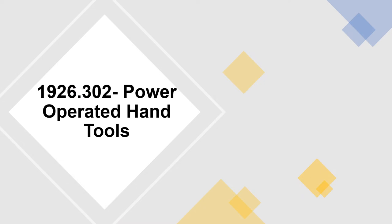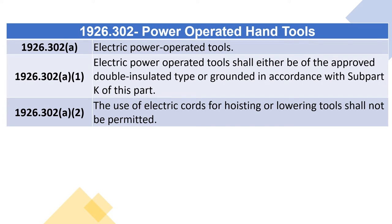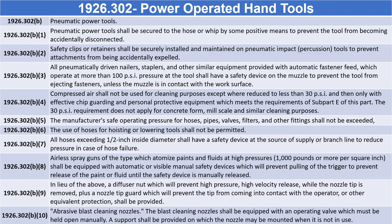1926.302 Power Operated Hand Tools. 1926.302(a) Electric Power Operated Tools. 1926.302(a)(1): Electric power operated tools shall either be of the approved double insulated type or grounded in accordance with subpart K of this part. 1926.302(a)(2): The use of electric cords for hoisting or lowering tools shall not be permitted. 1926.302(b) Pneumatic Power Tools. 1926.302(b)(1): Pneumatic power tools shall be secured to the hose or whip by some positive means to prevent the tool from becoming accidentally disconnected.